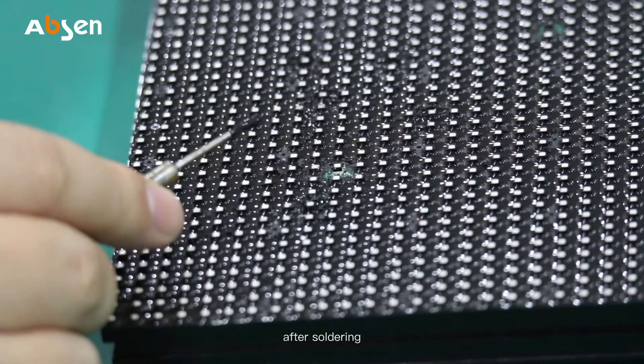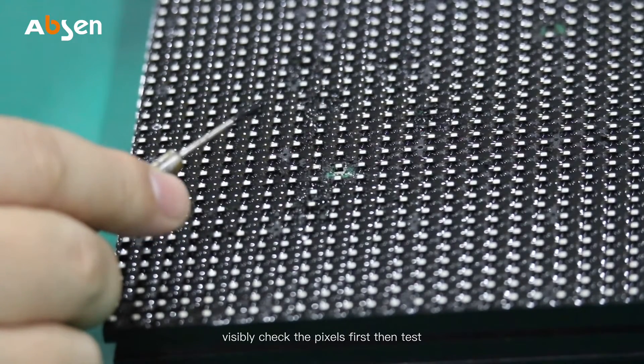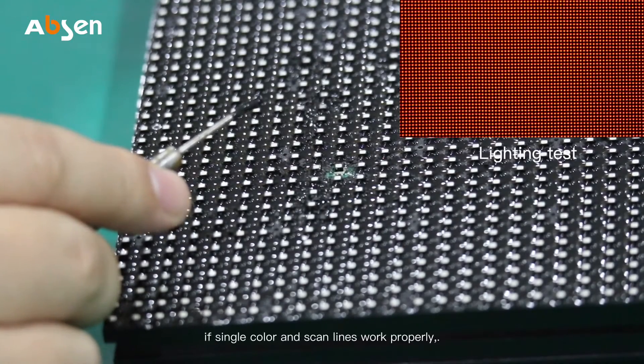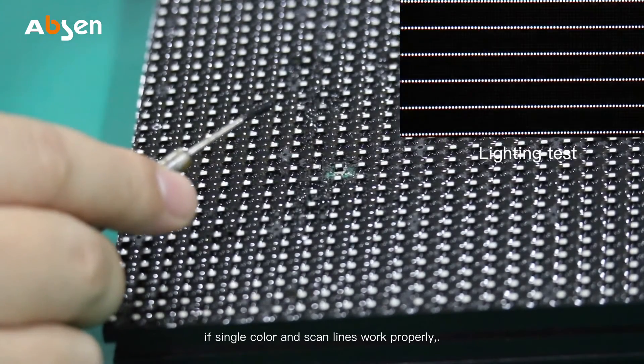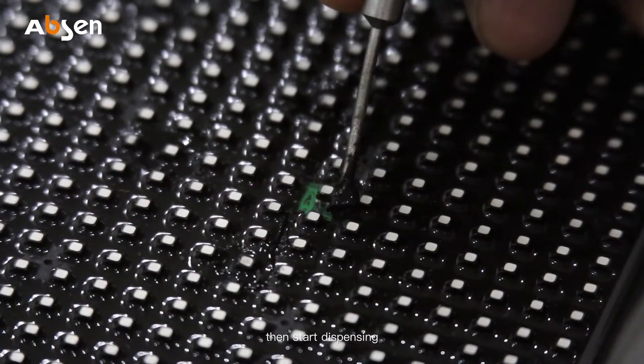After soldering, visually check the pixel first then test. If there is color missing, re-soldering will be needed. If single color and scan lines work properly, then start dispensing.